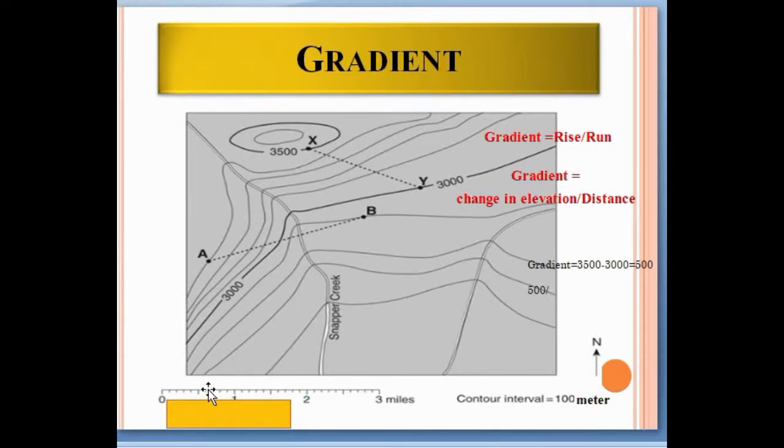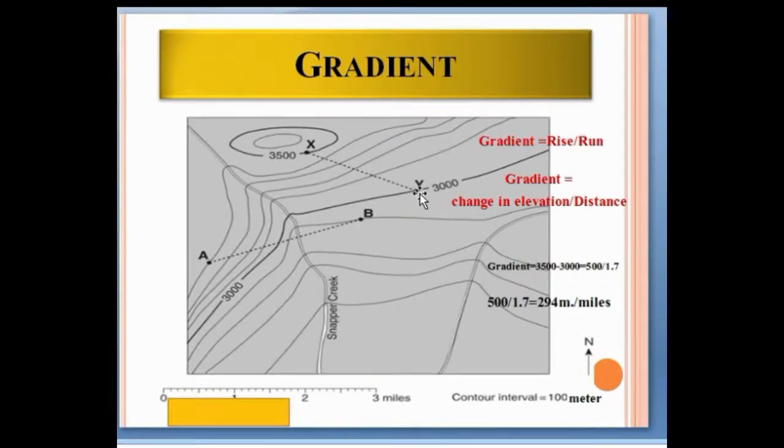This is 1, and we calculate from 1 to 1.5, and this is 1.7 miles. So the average gradient between point X and Y is 500 divided by 1.7, which equals 294 meters per mile. This is because the contour interval is in meters while the scale is in miles. It means for every mile we travel from point Y to point X, the elevation changes by 294 meters.